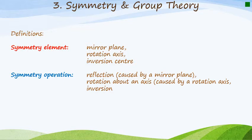Then we have the symmetry operation. Now this is what happens when we use the element. So for example, if we had a mirror plane, what does a mirror do? Well, it reflects. So the operation is then called a reflection. So we have, again, rotation that's caused by a rotation axis, and an inversion would be caused by an inversion center.